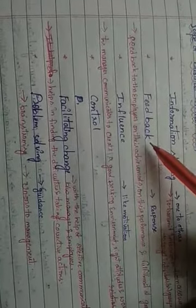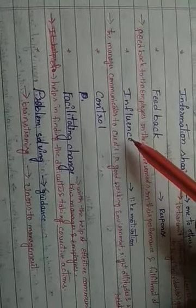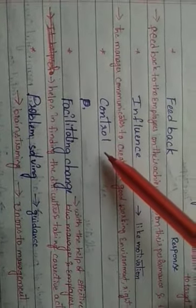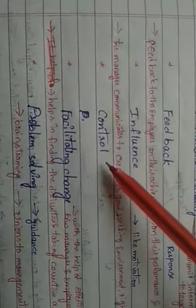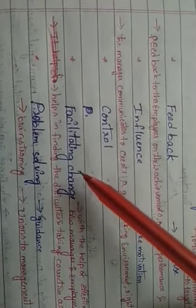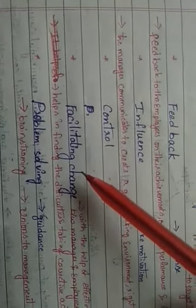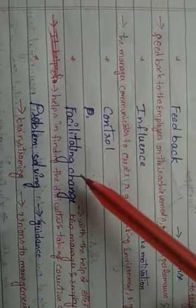To summarize the scope of business communication: information sharing means sharing information from one to another; feedback means response; influence means motivation; control means keeping employees focused and motivated; facilitating change means creating a better environment; and problem solving means solving issues through communication.